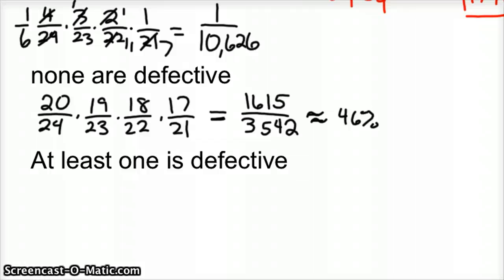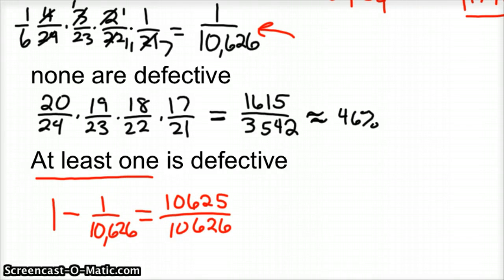And then the last problem is at least one is defective. Well, up here this is the probability that none are defective. So the opposite of that would be that there would be at least one being defective. So if you ever see that at least one, you can take one minus that. So if you take one minus 1,615 out of 3,542, we got a pretty good shot of one of these being defective. We've got 1,926 out of 3,542 chance of at least one being defective, which is almost 100%, 0.999. So we've got about a 100% chance of at least one being defective.